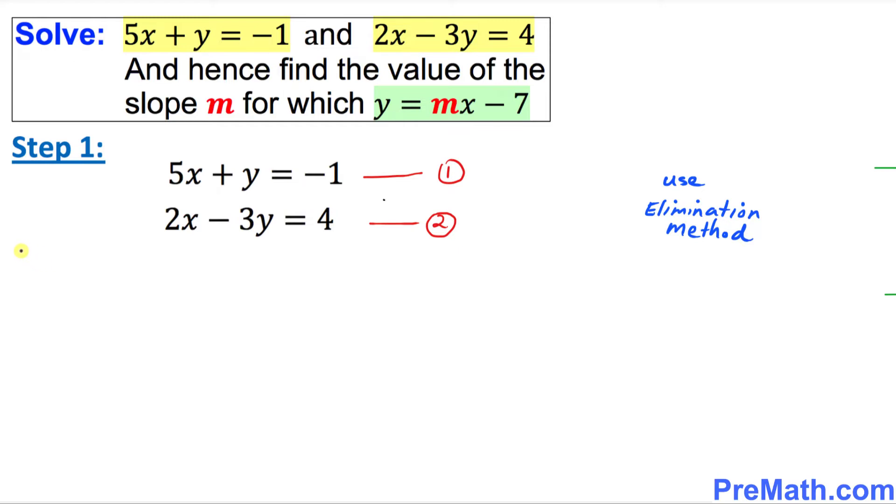So the very first step I am going to put down: multiply equation number one by positive three. Once we multiply equation number one by positive 3, multiply this one by positive 3, this one by positive 3, this one by positive 3, then we are going to get 3 times 5 is 15x plus 3y equal to negative 1 times 3 is negative 3.